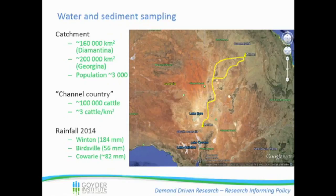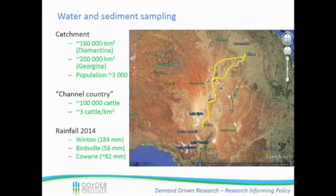Just to give you a brief overview of the area where we sampled - basically it's very big, with a very small population. It's extensively grazed, especially in channel country near the border, sort of in the middle of that yellow line. And in the period where we did sampling, the rainfall for the year had been quite low. Pretty much the whole area was in drought and quite water-stressed.